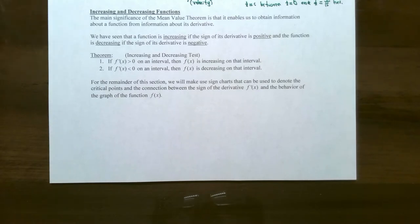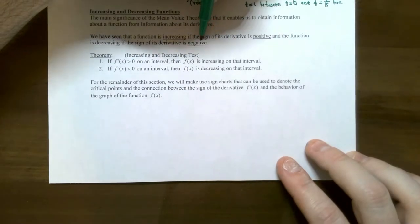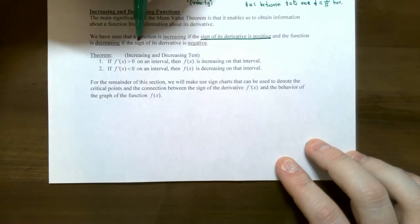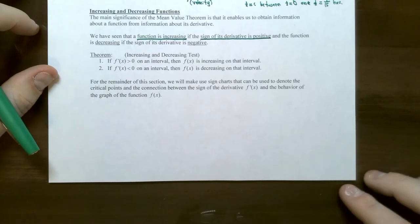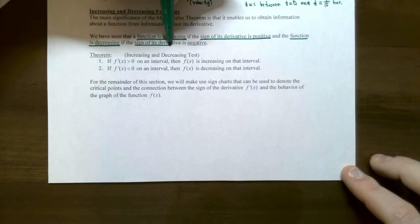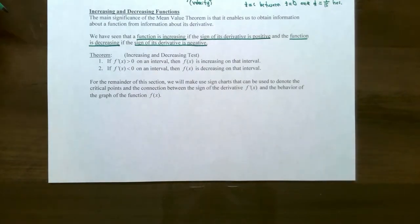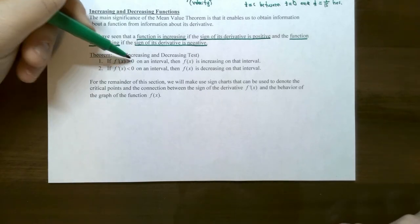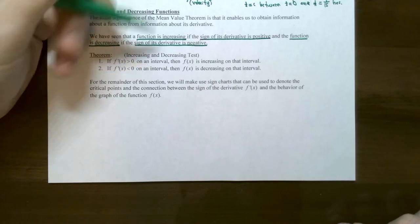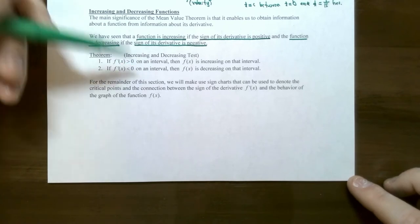The main significance of the mean value theorem is that it enables us to obtain information about a function from information about its derivative. We have already seen that if the derivative is positive, the original function is increasing on that interval. And if the function is decreasing, that means the sign of the derivative had to be negative. So now we can discuss what's called the increasing and decreasing test: if the sign of the derivative is positive on an interval, the original function is increasing on that same interval; if the derivative is negative on that interval, then the original function is decreasing.